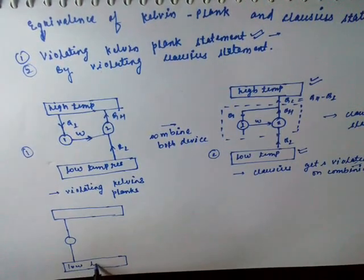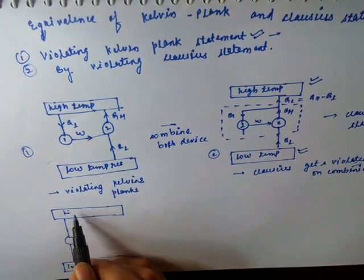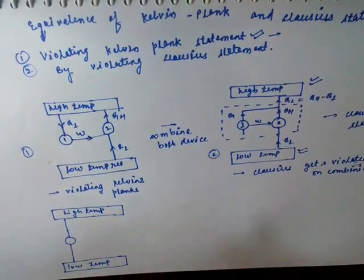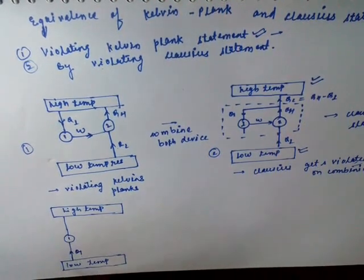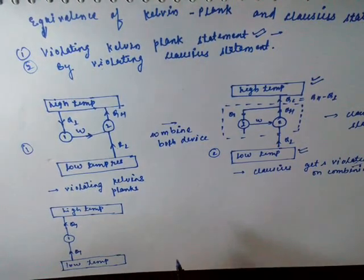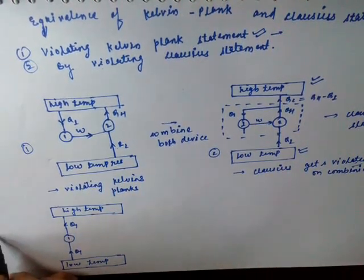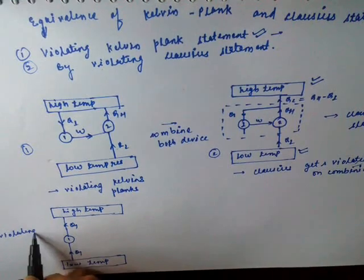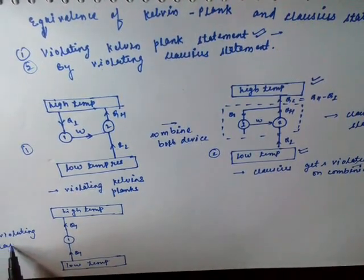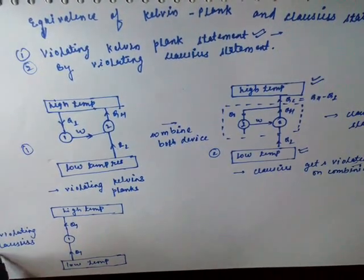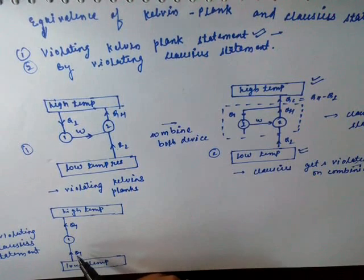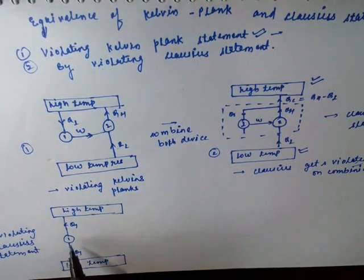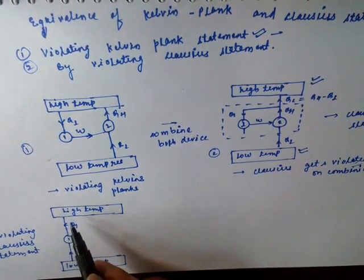This is the low temperature reservoir and this is the high temperature reservoir. Device 1 is taking Q1 from the low temperature body and delivering Q1 to the high temperature body. Here, what we are doing is violating the Clausius statement — by making a device which transfers heat from a low temperature body to a higher temperature body without producing any other effect.